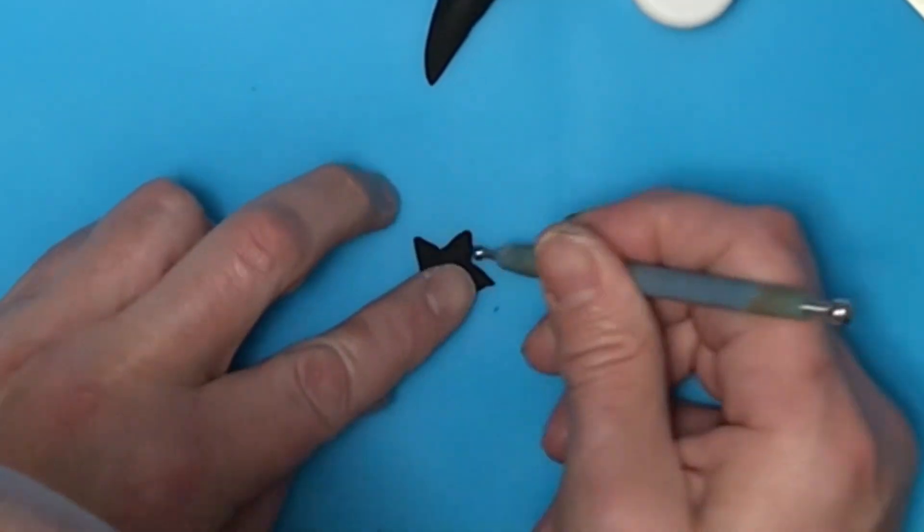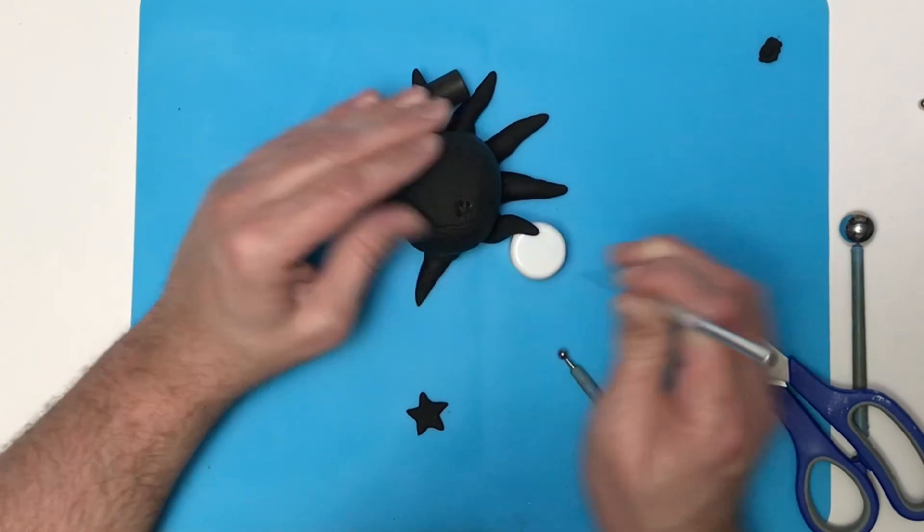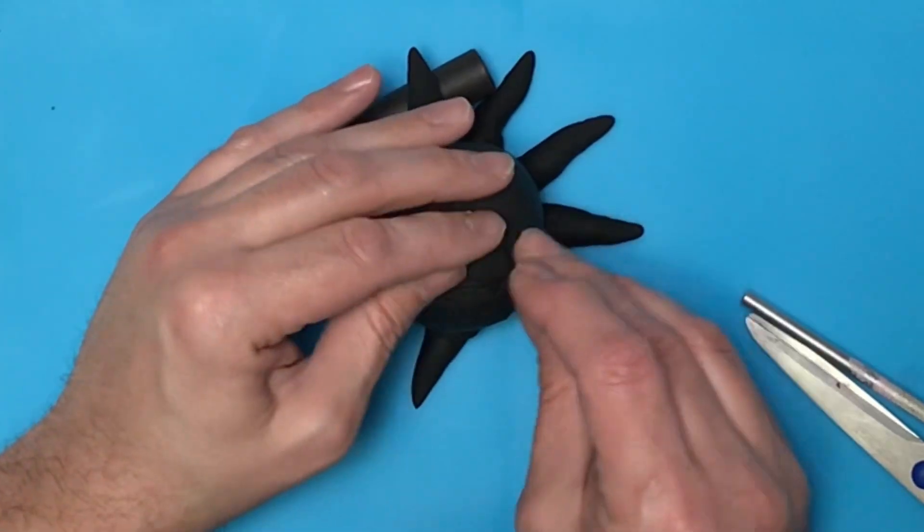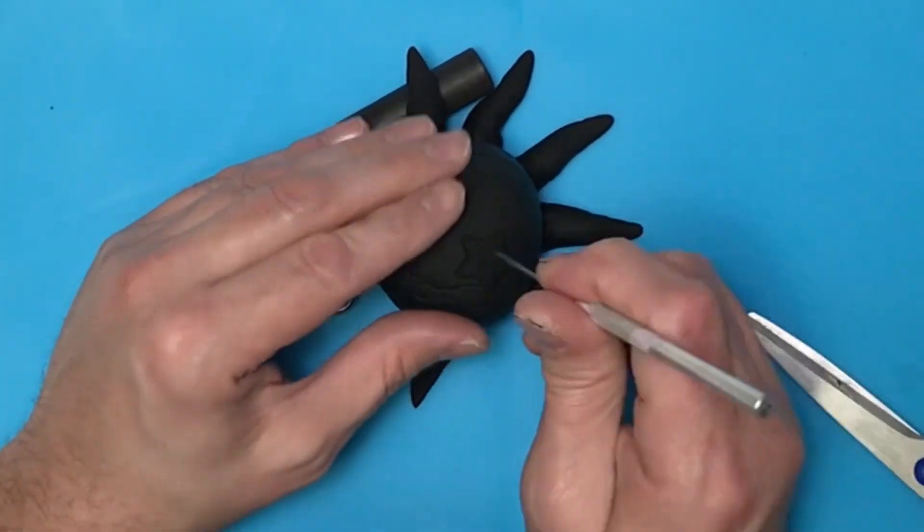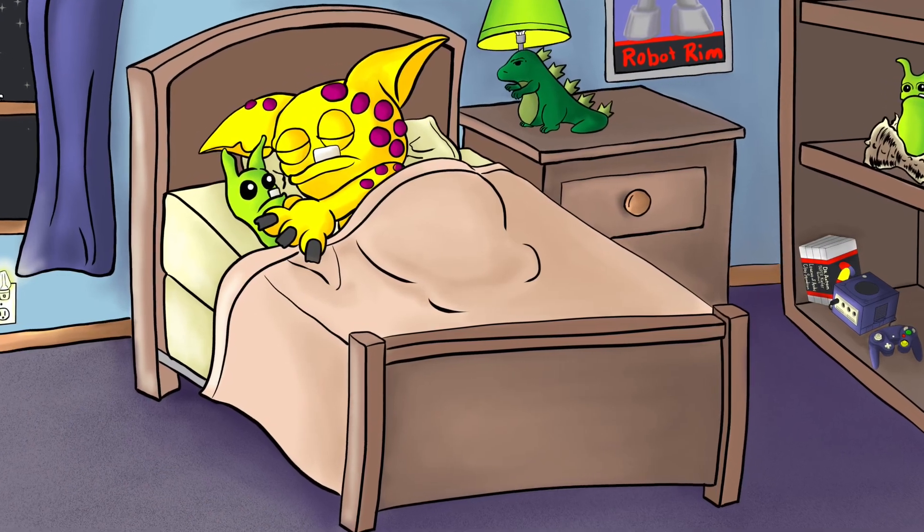I'm going to rough up the surface of the octopus where the starfish is going to set. I'm hoping that helps bond the two together if I put a little pressure and it has that unevenness to it. It kind of squishes in there a little bit. In my head it works. I don't know, we'll see.